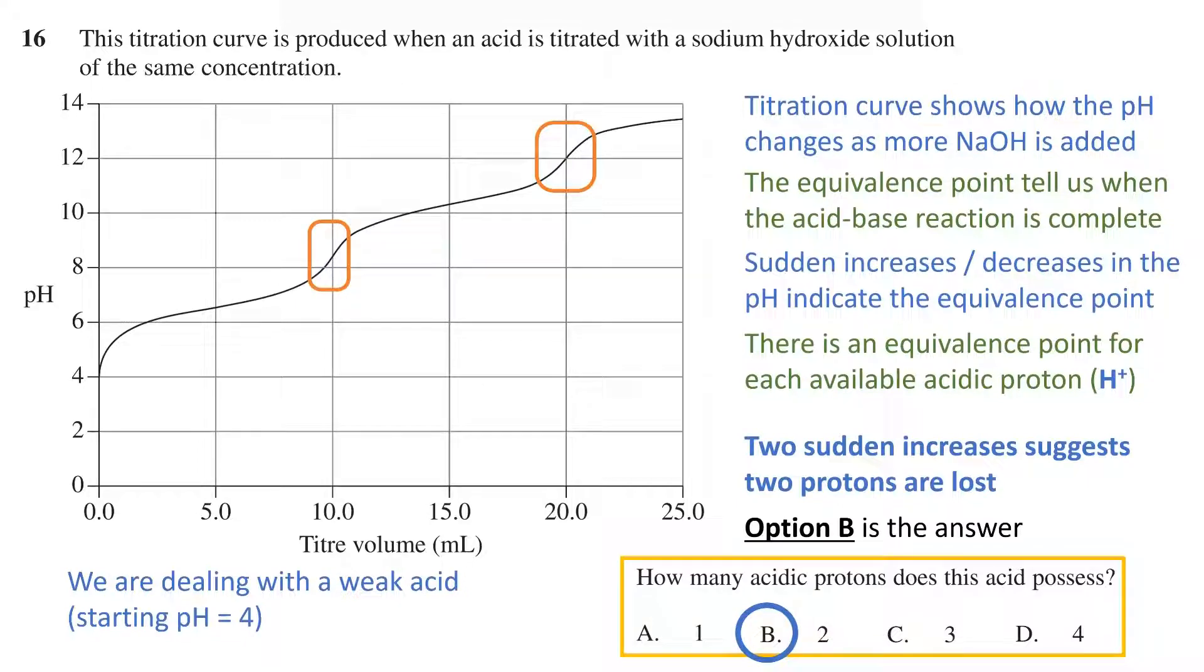We can even write out the general form of the reaction that occurs at these two points. The acid has two available hydrogens to begin with, and then the first hydrogen is lost, leaving behind a negatively charged ion with one more available hydrogen. At the next point, the negative ion loses its last available hydrogen, leaving behind a negative 2 ion.